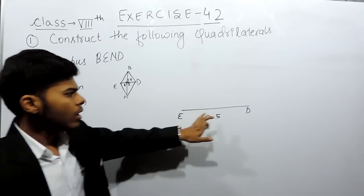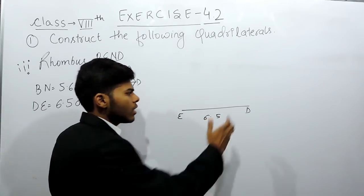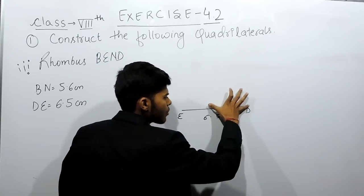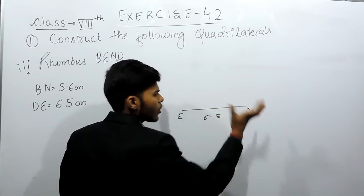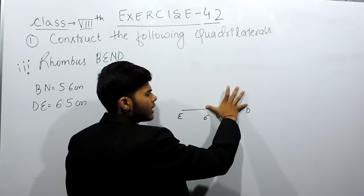Now, we will make the perpendicular bisector of the line ED. How to make perpendicular bisector? Open the compass till more than half of the line segment. Supposing it till here. Don't measure it on the scale, just by some approximation you can measure it till here.